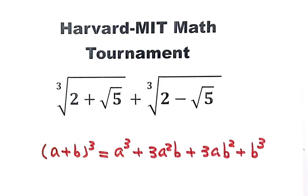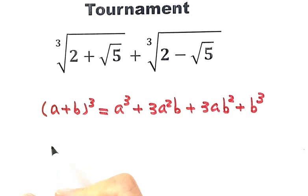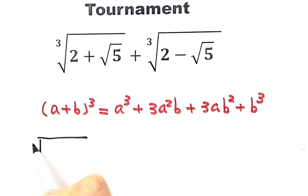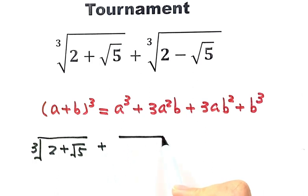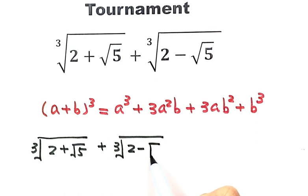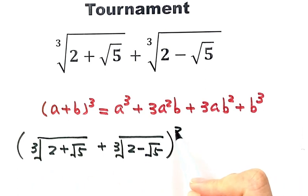Now let's get started with our question. We need to evaluate the sum of these two cube roots: the first one is the cube root of (2 + √5), and the second one is the cube root of (2 - √5). This is the quantity we want to evaluate. We'll raise it to the power of 3 and apply the formula.